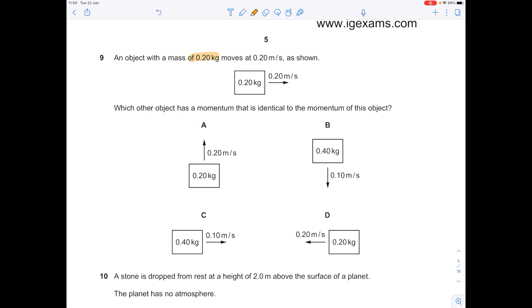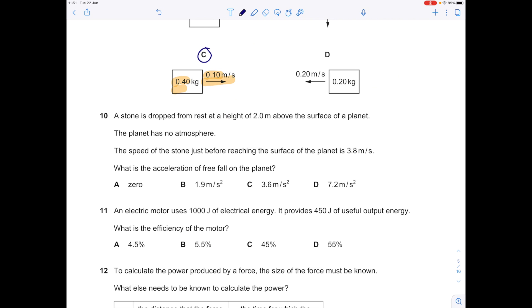An object with a mass of 0.2 kilograms moves at 0.2 meters per second as shown. Which other object has a momentum that is identical to the momentum of this object? Remember that momentum equals mass times velocity, which is 0.2 times 0.2 to get 0.04 kilograms meters per second. So we're looking from option A, B, C and D which of the following has that same momentum in the same direction. Because remember, momentum is a vector quantity with both a magnitude and a direction. So we need a matching direction, which we can see here. And if you were to multiply those numbers together, you'd also get 0.04. So the answer is C.